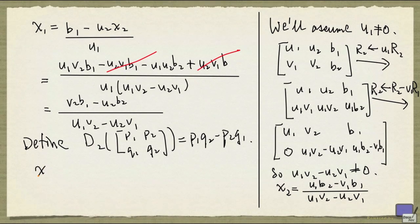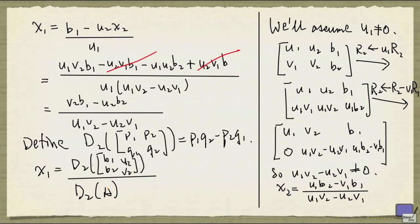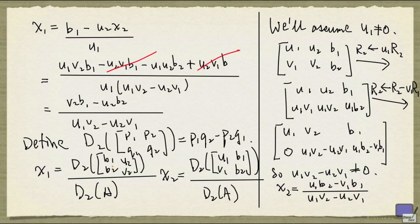And I'll ask you to check that x1 can be written as d2 of this matrix divided by d2 of A, and x2 can be written as d2 of this matrix divided by d2 of A. Now notice that in x1, the matrix here is obtained from A by replacing the first column with b1, b2. And for x2, the matrix here is obtained from A by replacing the second column by b1, b2. And as you might have guessed, d2 is the determinant function of a 2 by 2 matrix.